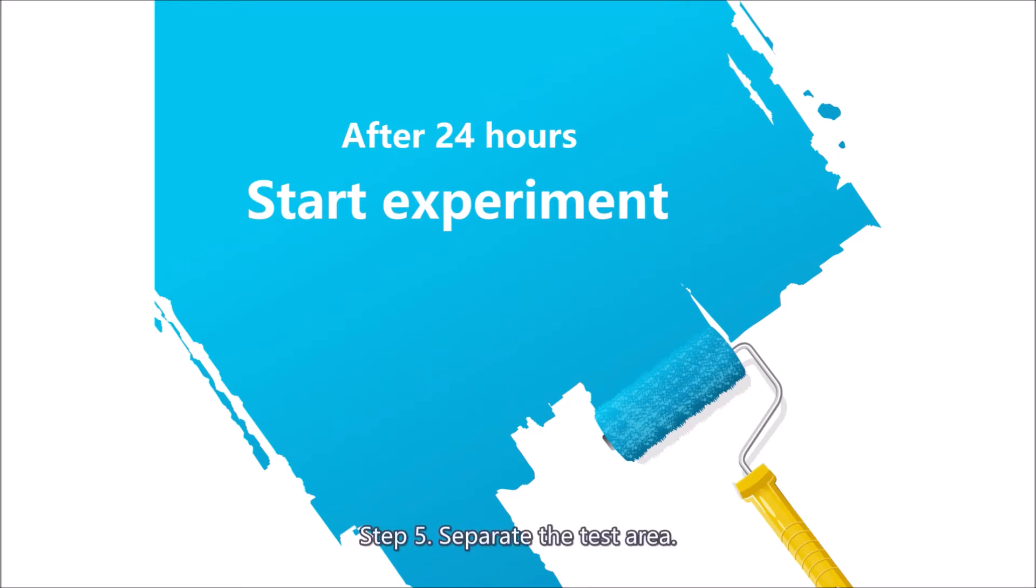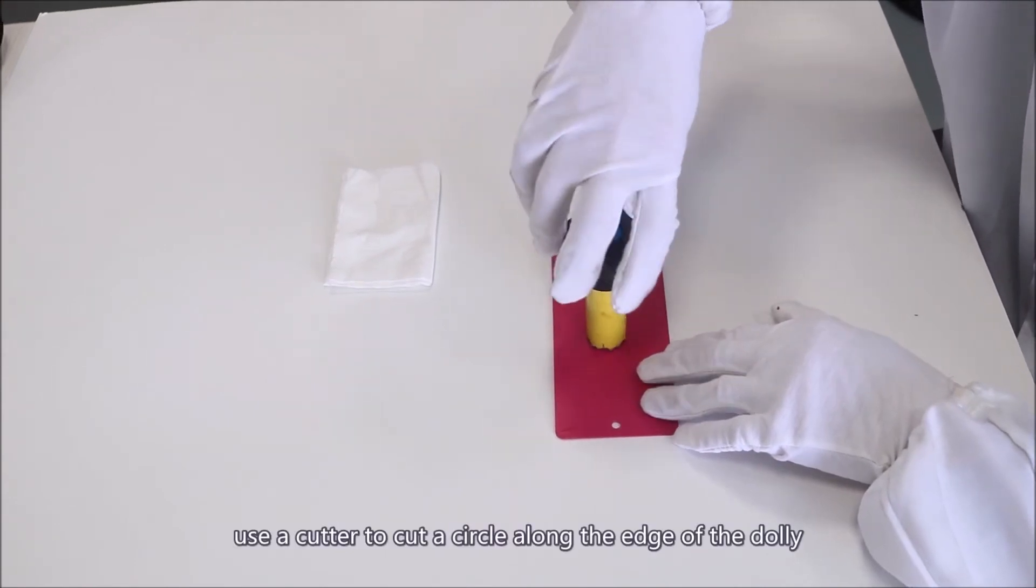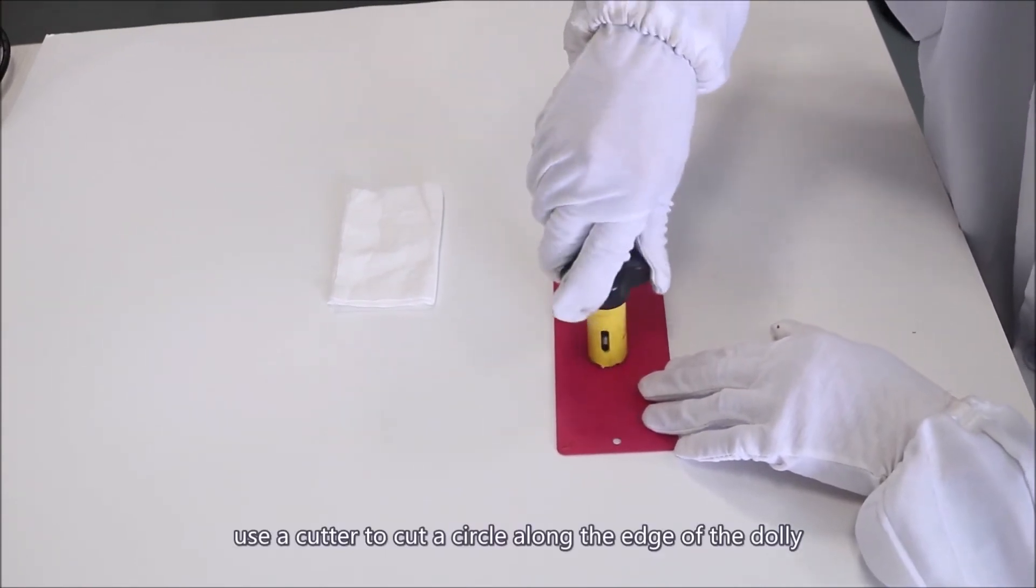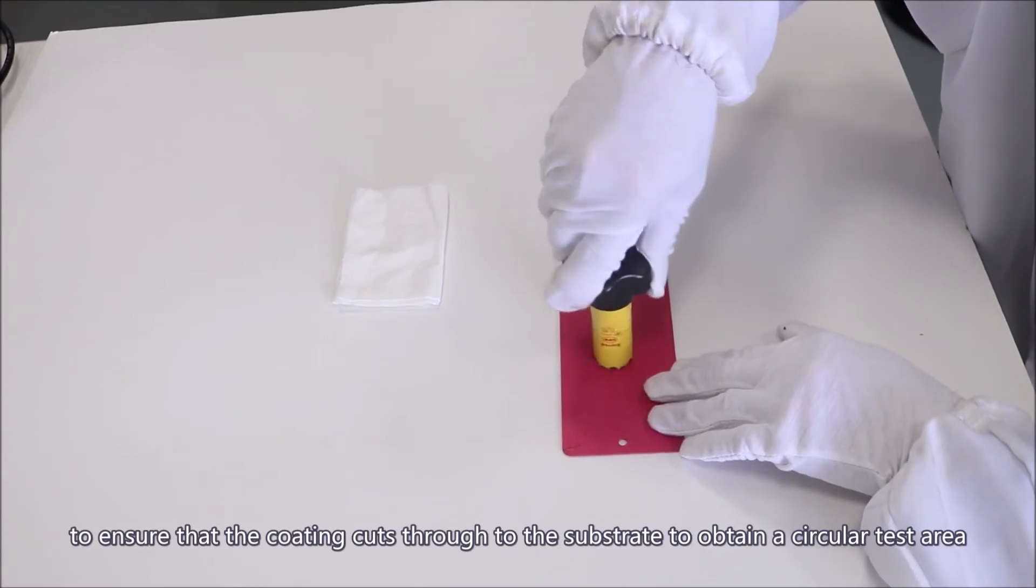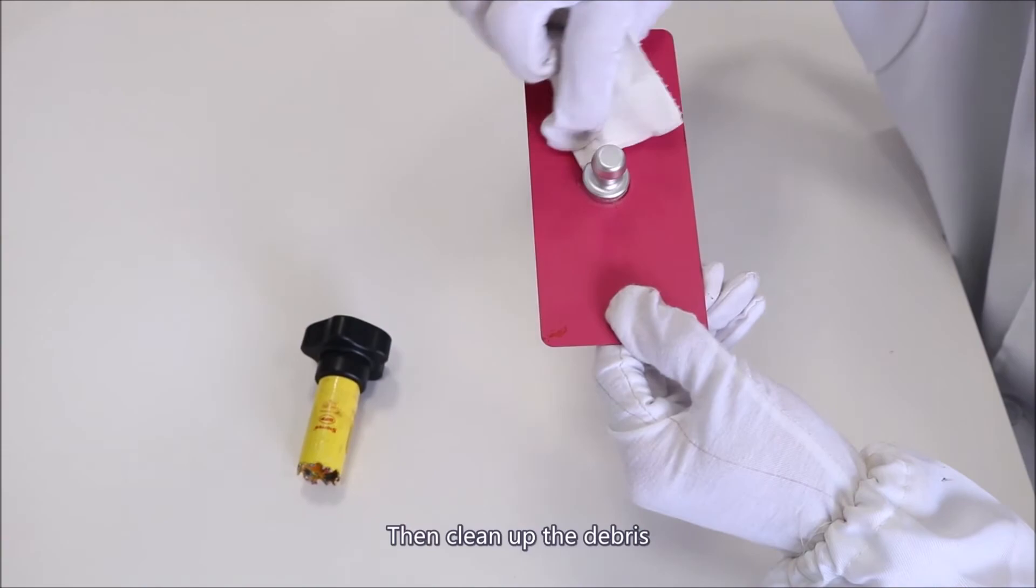Step 5: Separate the test area. After the adhesive is completely cured, use a cutter to cut a circle along the edge of the dolly to ensure that the coating cuts through to the substrate to obtain a circular test area. Then clean up the debris.